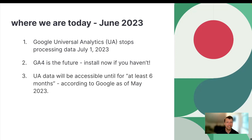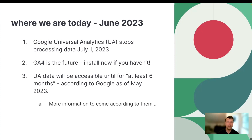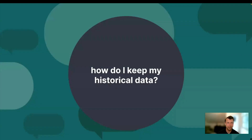Google has essentially stated, as of May 2023, that your data will be available for at least six months. So that gives us about to the end of the year, according to them — they haven't given a specific date. More information is coming out, so we'll keep a handle on it. But it doesn't mean we shouldn't start preparing anyway, because it is fairly complicated, and we want to make sure that we can keep our historical data.